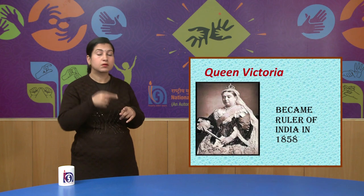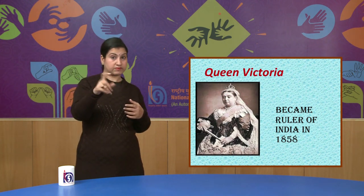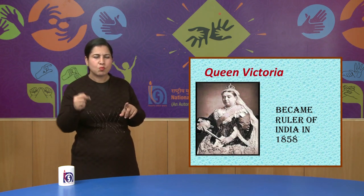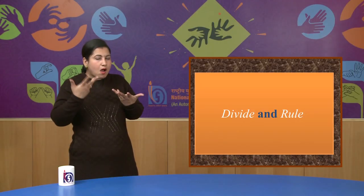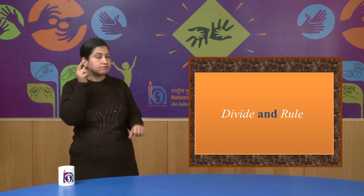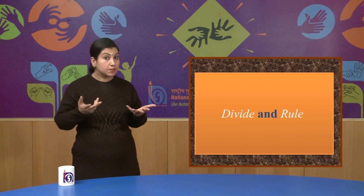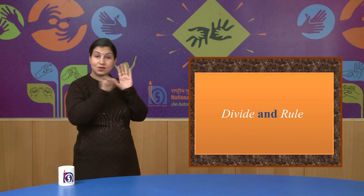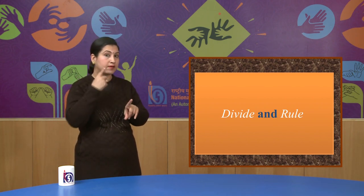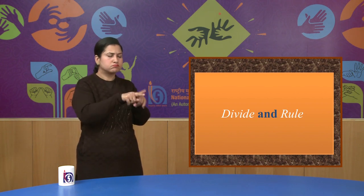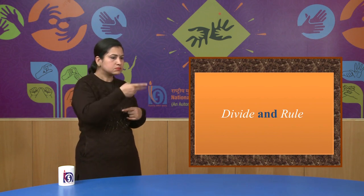However, there were many bad effects of this revolt also. Both Hindus and Muslims had participated in the revolt of 1857. The British government became afraid of this unity and decided to use the policy of divide and rule. This policy was created by the British to create differences between Hindus and Muslims and to get benefit from them.